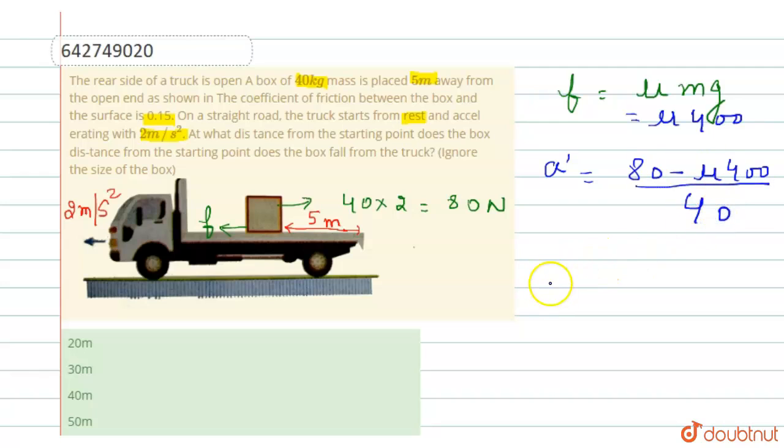From this, we can find the value of a'. a' equals 2 minus 0.15 times 10, which gives us a' equals 0.5 meters per second squared. This is the value of acceleration of the box with respect to the truck.